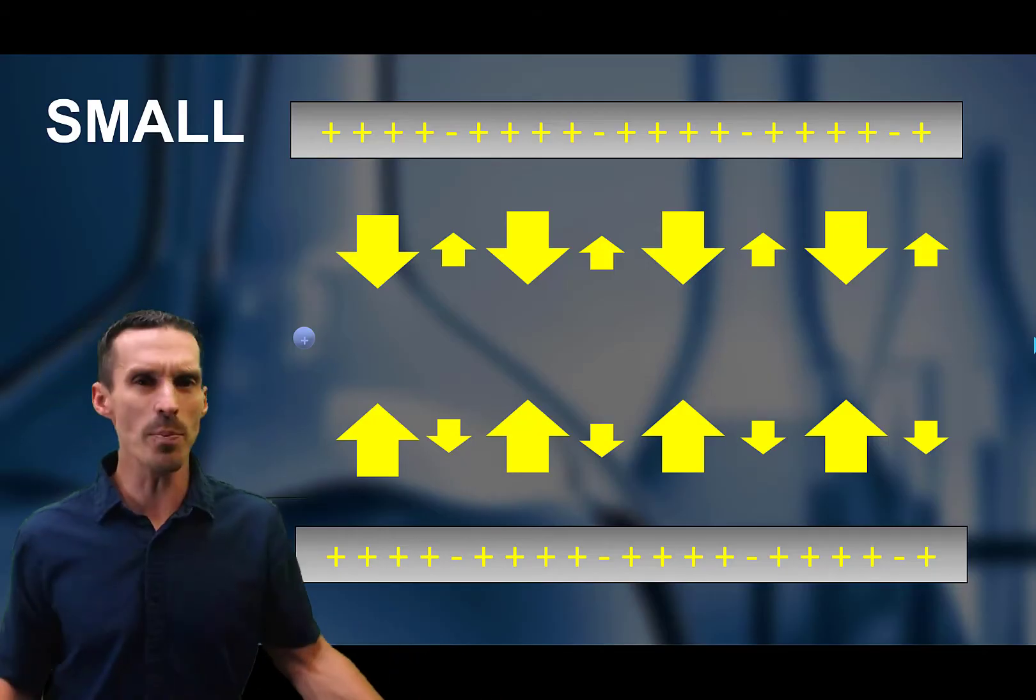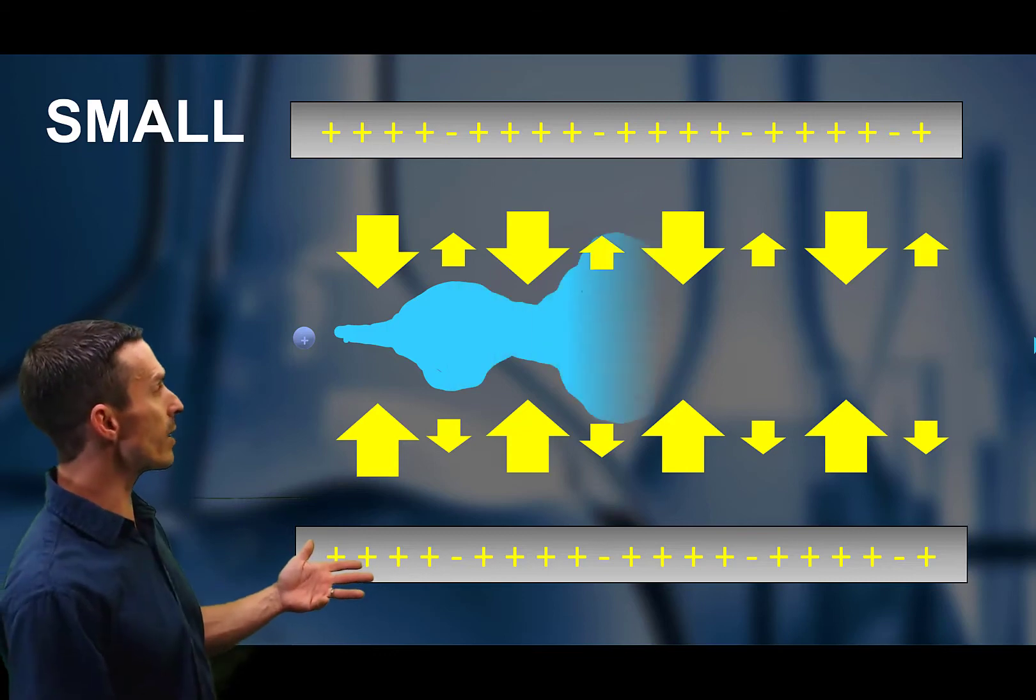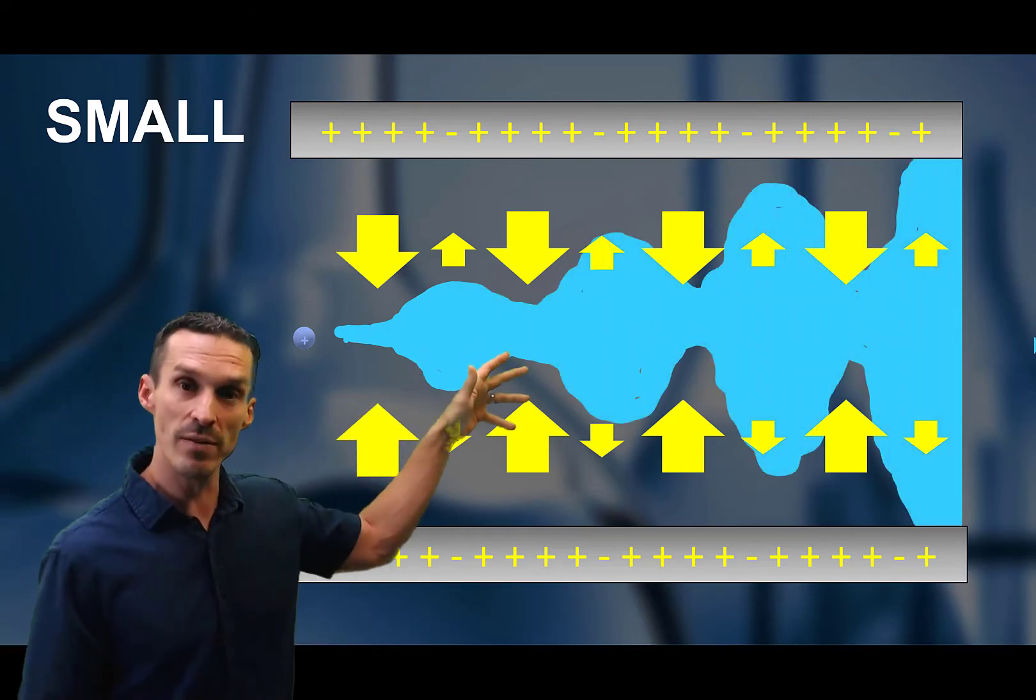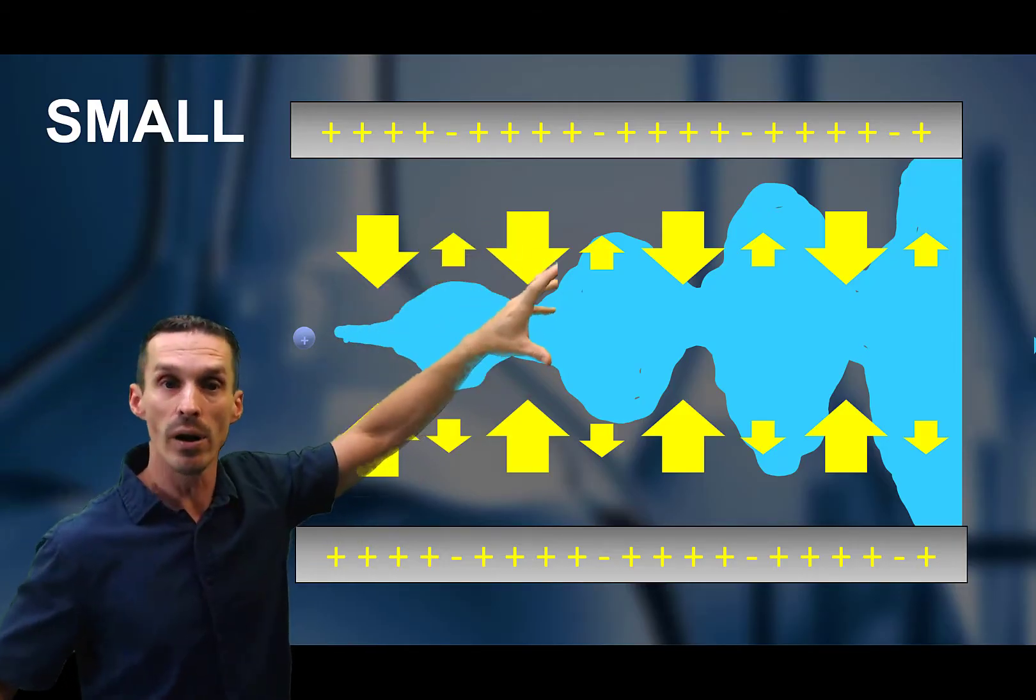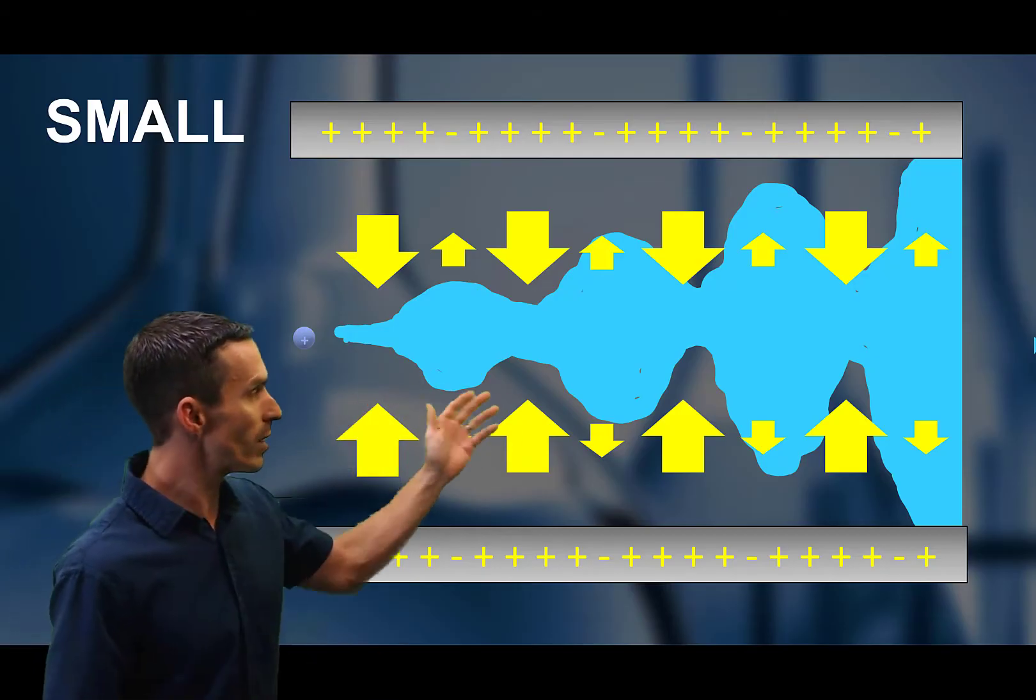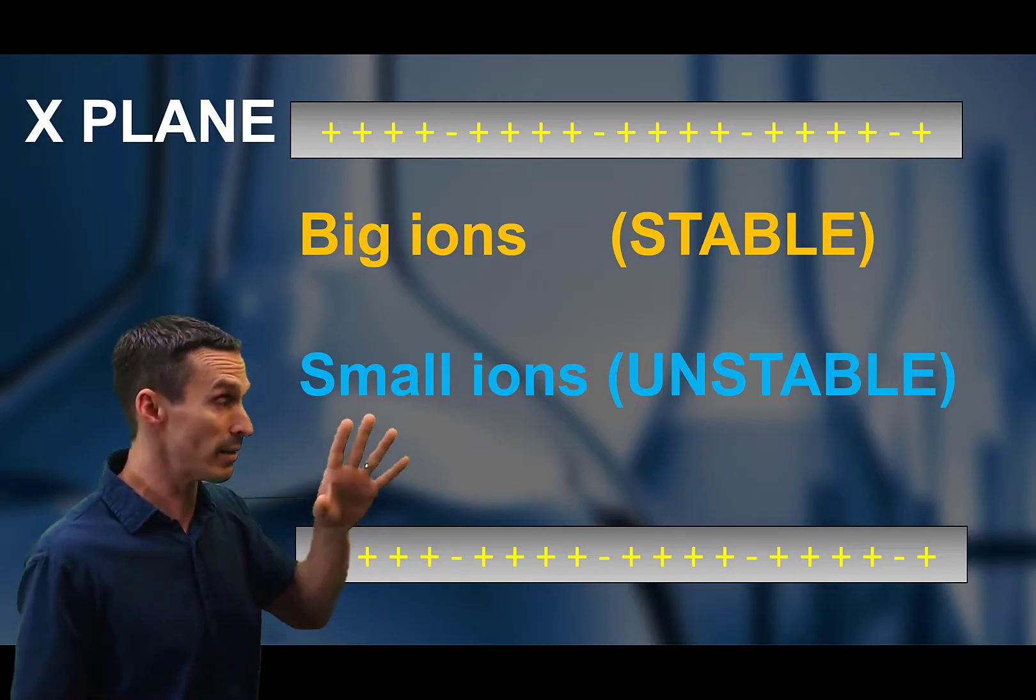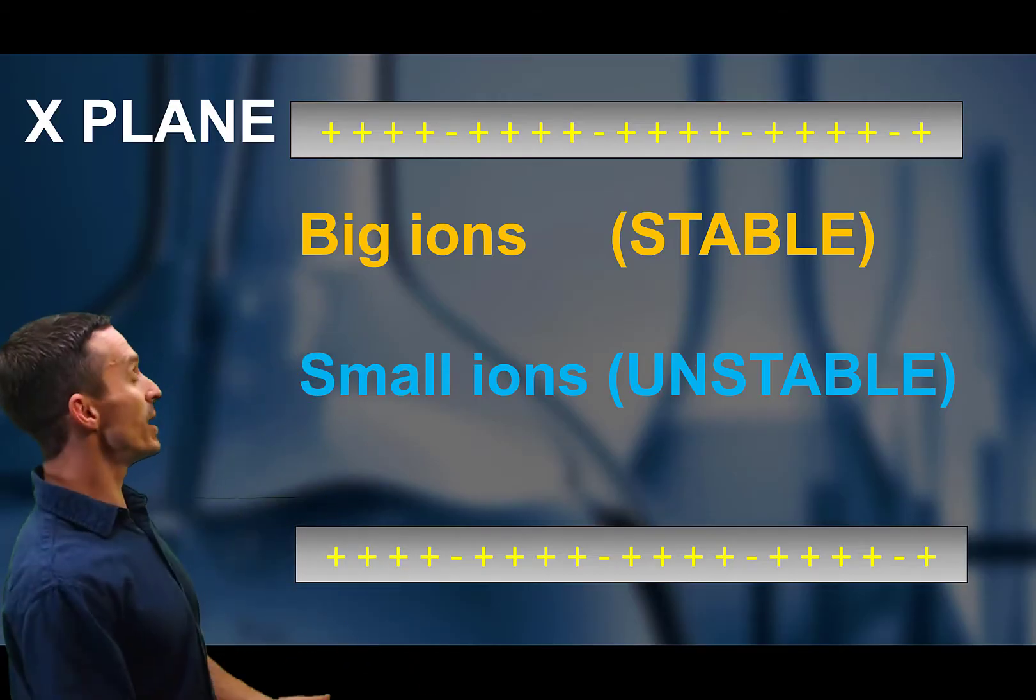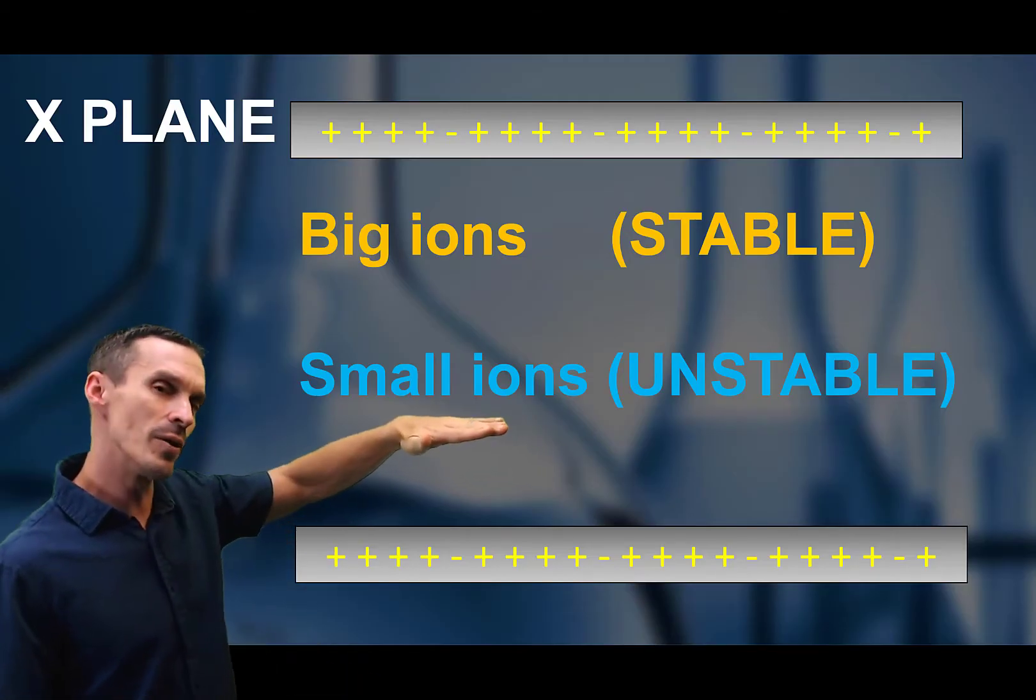What about for the small ions? Well, the opposite scenario will happen, because the ions are so quick to respond to a change in voltage. Every time that voltage switch is negative, they sort of pulse out a little bit more. These ions are destabilized and they won't get through the quad. Yeah, I know, I know, like it's—I know it's confusing, but here's the summary: the big ions are stable, the small ions are unstable. That's in the x-plane.